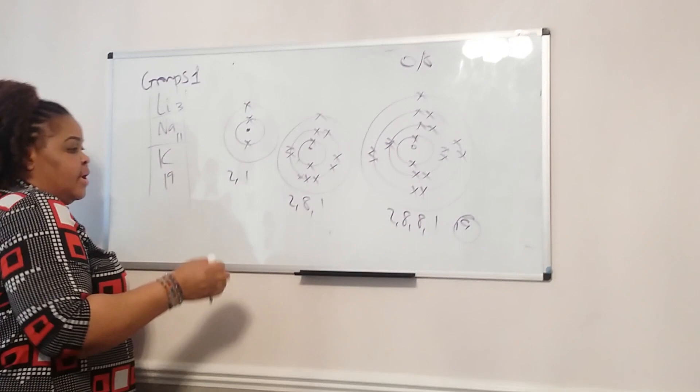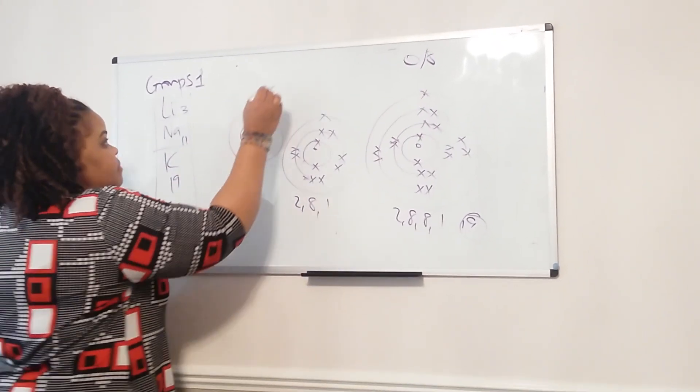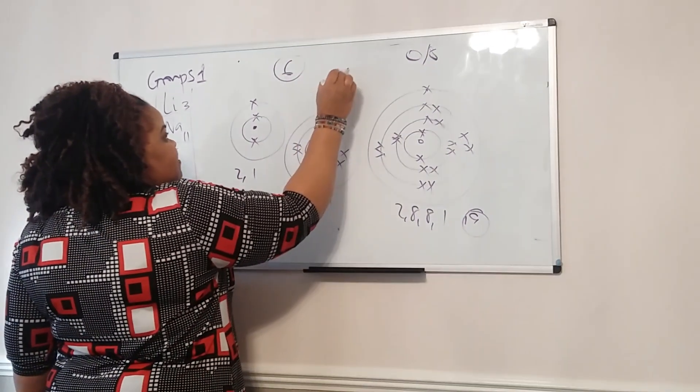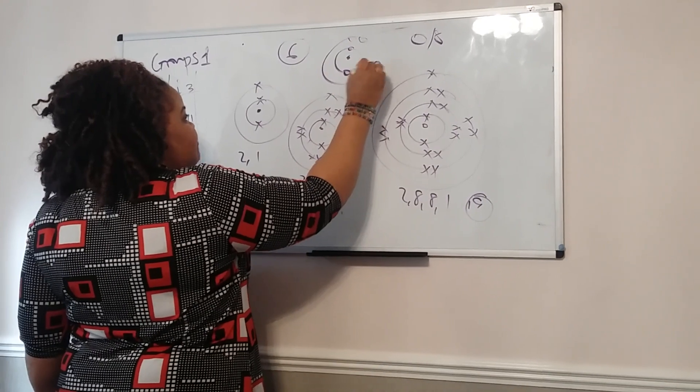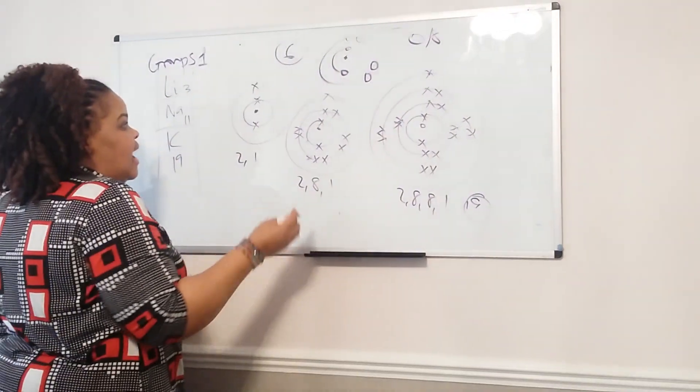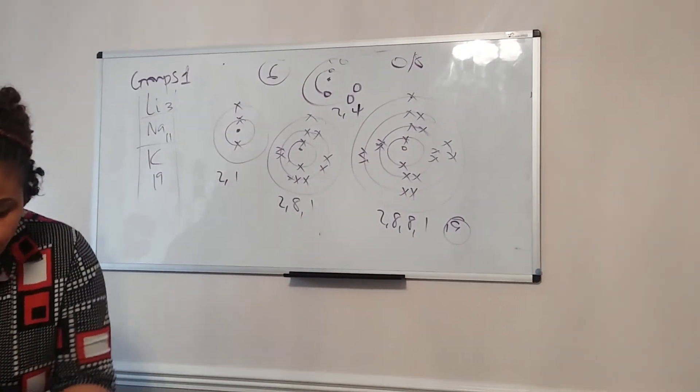If it was carbon, for example, carbon is in group 4. Carbon has 6 electrons. If I was to draw that, it would be like so. Because I've only got 6 electrons, it would be 2-4. So that is how to draw electronic structure.